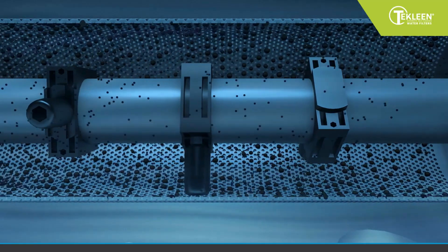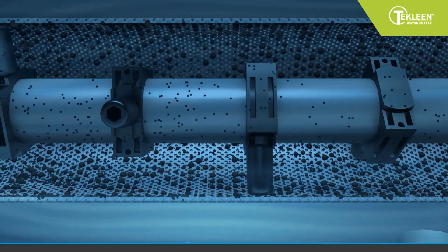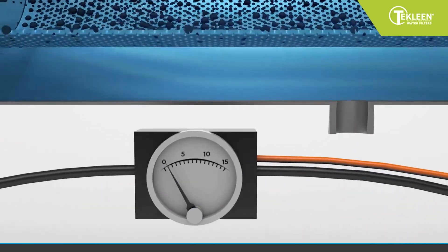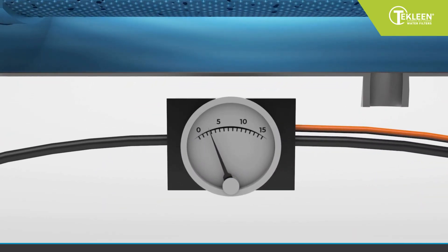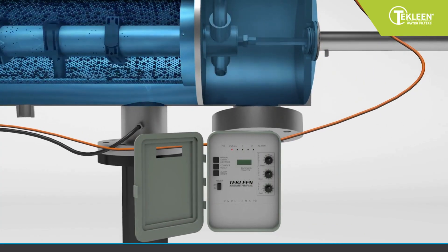This buildup of particulates causes a pressure drop at the outlet, which is constantly monitored by a differential pressure, also known as a DP sensor. Once a pressure differential of 5 to 7 pounds is reached, the electronic controller activates a flush valve to initiate a backwash cycle.